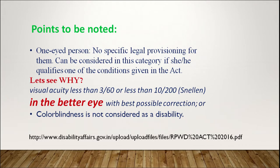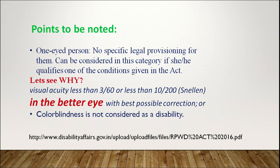Two important points to note: First, a person with one eye is not considered blind and there is no specific legal provision for them. They can be placed in this category only if they qualify one of the conditions given in the act in both eyes, because the act specifies that visual acuity less than 3/60 or less than 10/200 must be in the better eye. So even if one eye is not functioning, the values are taken from the functioning eye, and therefore one-eyed people are not considered blind or in the low vision category. Second, colorblind people are also not considered to have a disability because their visual acuity is within permissible values for normal vision.